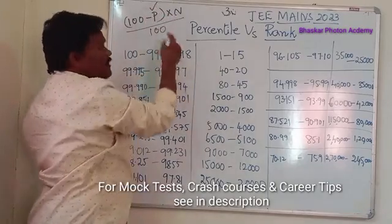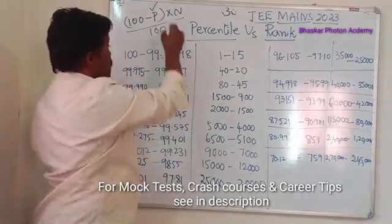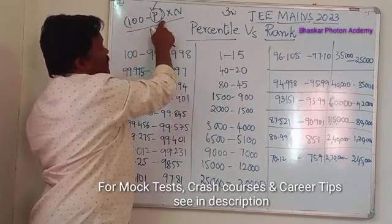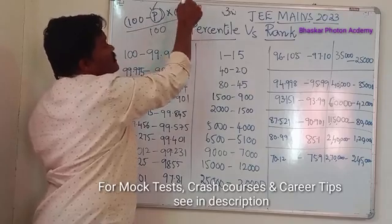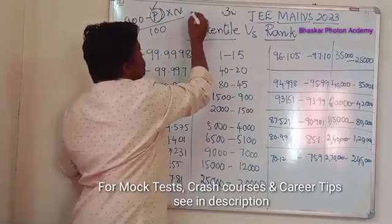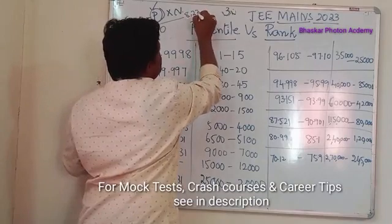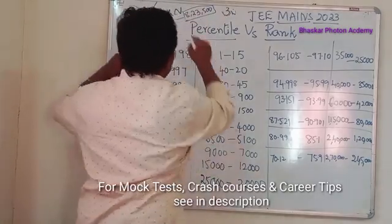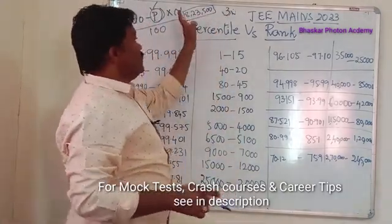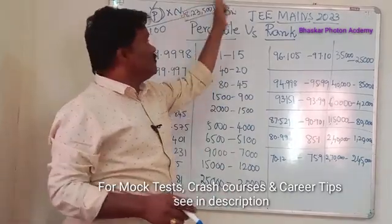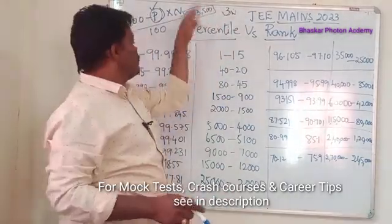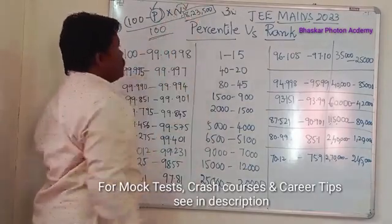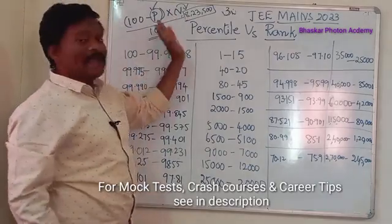Whatever percentile you got, you can calculate your rank using this formula: (100 minus percentile) into number of students who appeared, divided by 100. As per the information, around 8,23,000 students appeared — approximately 8,70,000 applied and around 8,23,000 actually appeared. That is the value of N divided by 100, which gives you the rank.